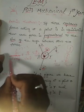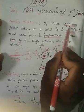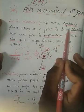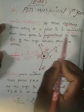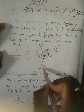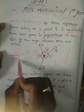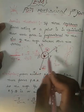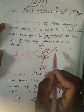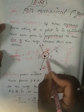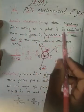Listen carefully — this is very important. From this formula we have to find the answer for the given question. Lamy's theorem: three coplanar forces acting at a point in equilibrium, then each force is proportional to the sine of the angle between the other two forces. The formula is P/sin α = Q/sin β = R/sin γ, where alpha, beta, gamma are the angles opposite to forces P, Q, R respectively.